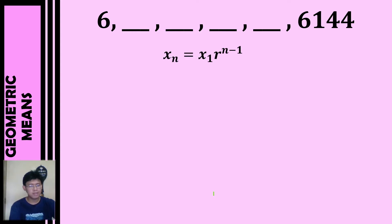We will still use the same geometric sequence formula: x sub n equals x sub 1 times r raised to n minus 1. And again, our main objective is to find the common ratio. So let's identify our given. Our first term is 6, our sixth term is 6,144, and our number of terms is 6.